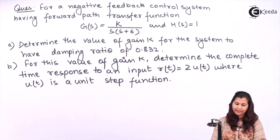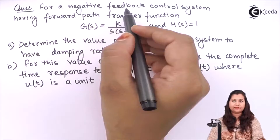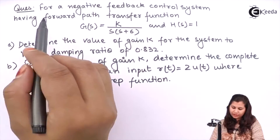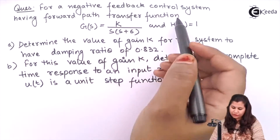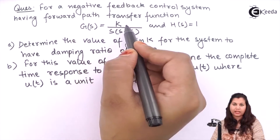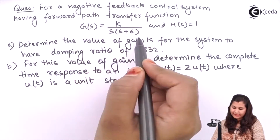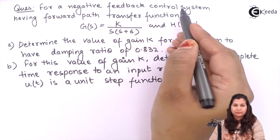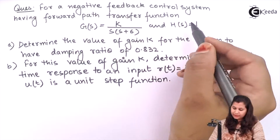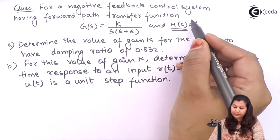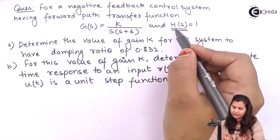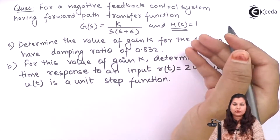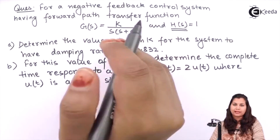Our problem is that for a negative feedback control system which has a forward path transfer function G(s) equals k upon s(s+6). Because it is a negative feedback control system, and the feedback loop has transfer function H(s) equals 1, so it is basically a unity feedback system.